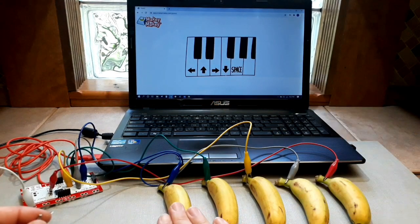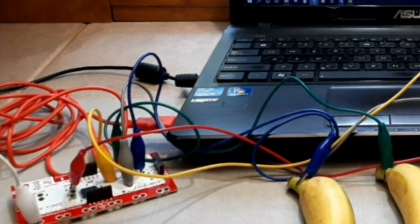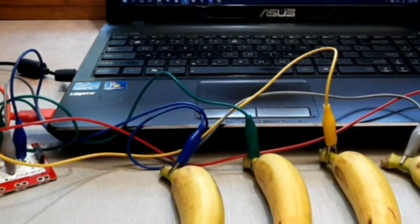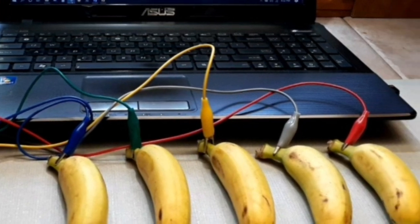Arrange your bananas so that they match the order of the keys on the keyboard. For example, the banana connected to the left hole on the Makey Makey board will be the first banana. The banana connected to up on the board will be the second banana, and so forth.